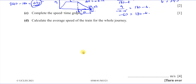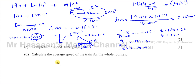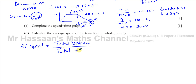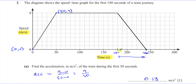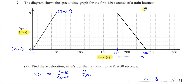For part C, we need to calculate the average speed of the train for the whole journey. To find the average speed, we need the total distance divided by the total time. The distance traveled is found by finding the area under a speed-time graph. The way I prefer to do it is to use the fact that this shape is a trapezium, and the area of a trapezium is given by H divided by two, times (A plus B), where H is the distance between the parallel sides and A and B are the parallel sides.